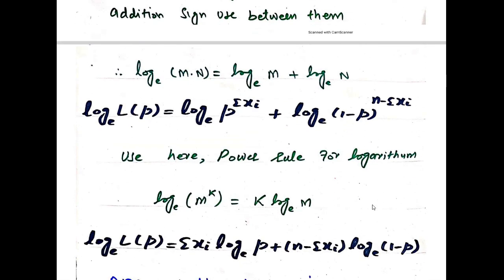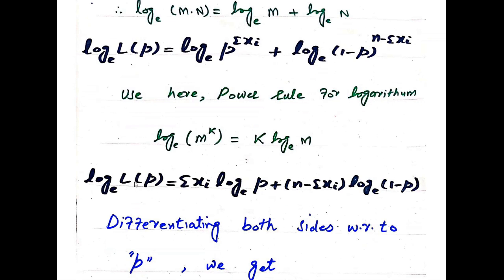Now we apply the power rule for logarithm. The power rule states that when you take the log of a number raised to a power, you multiply the power by the log of the number. So log L(p) = Σxi · log(p) + (n - Σxi) · log(1 - p).